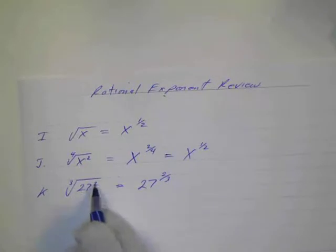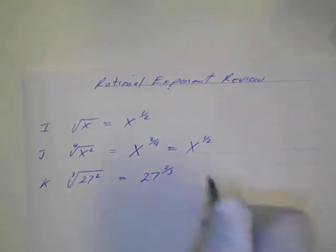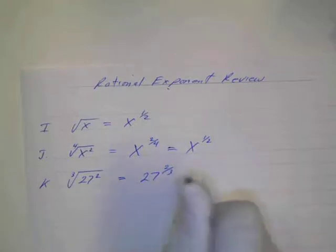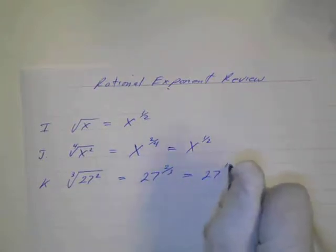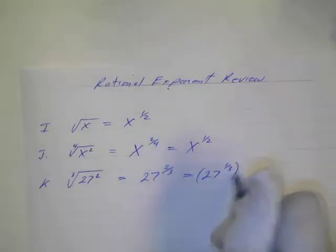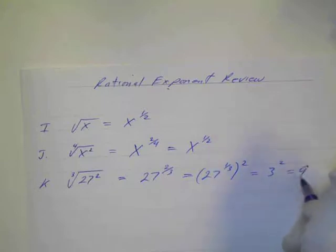Okay, 27 to the - this is the power, and this is the root. Power over root. And we could write this as 27 to the one-third power squared. That's the same thing as two-thirds. Root first. And what's the cube root of 27? Well, that's 3. And what's 3 squared? That's 9.